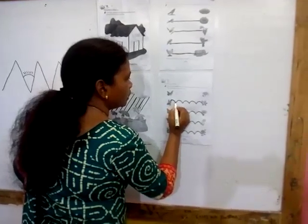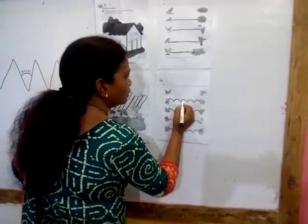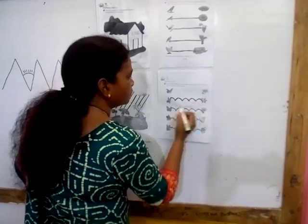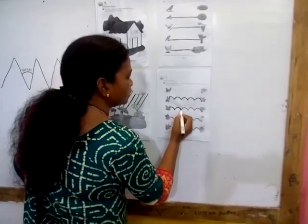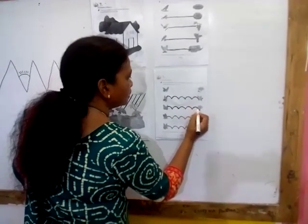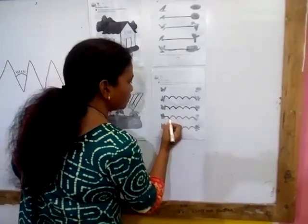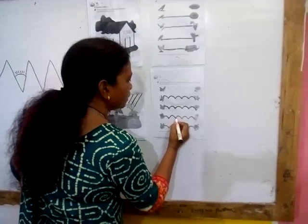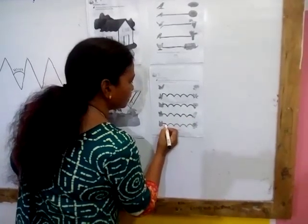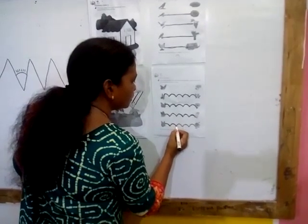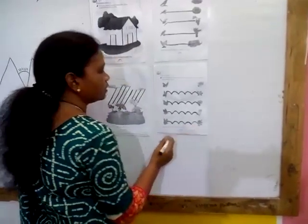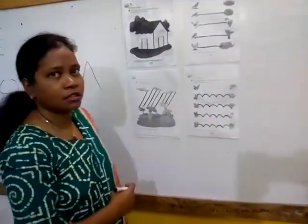Next is curve line. Curve line, curve line, curve line, curve line, curve line. This is called curve line.